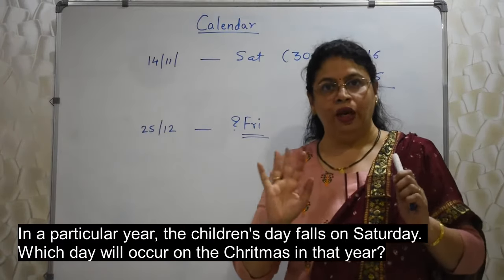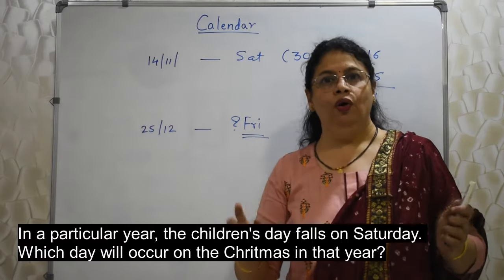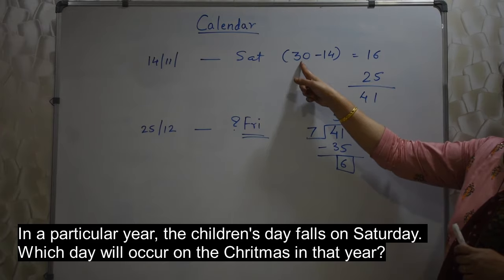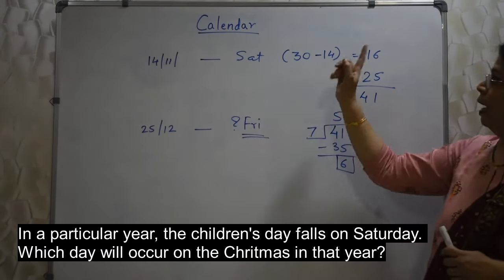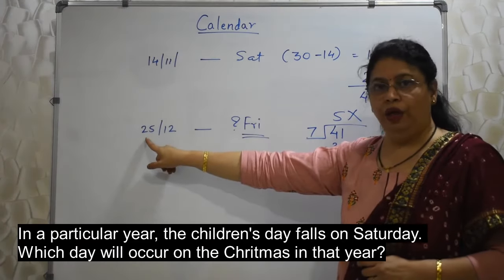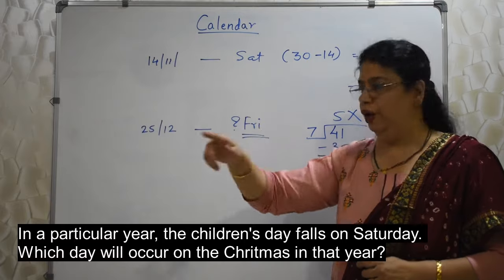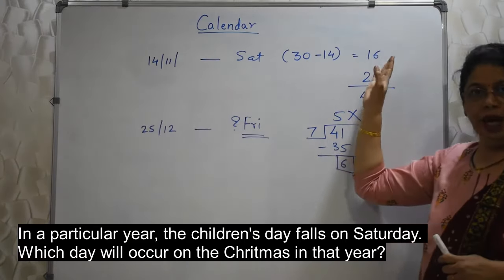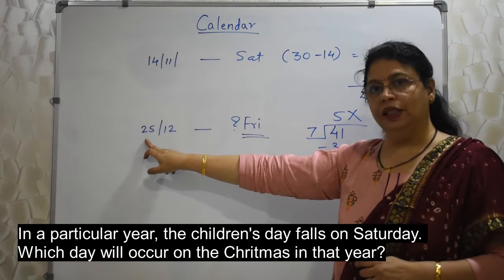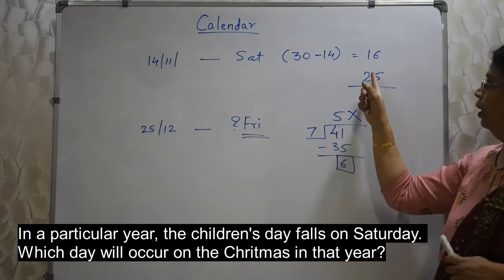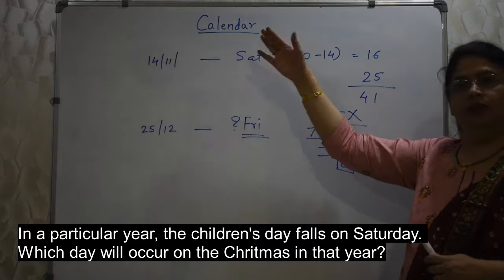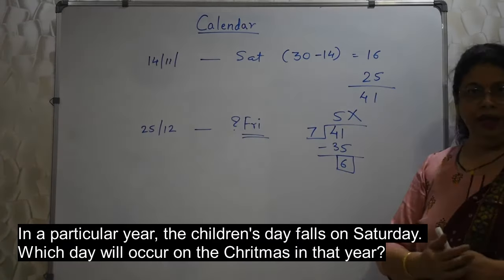We cannot count days on fingers — we need a smarter method. Always write the total days of the starting month, subtract whatever date is given, then add the date of the target month. If there are months in between, add all days of those months. Then divide the total by 7 and use the remainder to count forward. That gives you the day of the week.